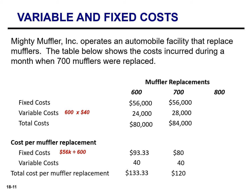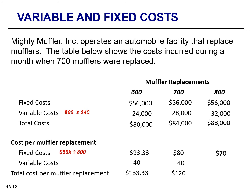Now let's look at 800 mufflers being replaced. Fixed costs remain constant at $56,000. Variable costs are 800 multiplied by $40, arriving at $32,000. When replacing 800 mufflers, total costs are $88,000. Fixed cost per unit is $56,000 divided by 800, which equals $70. Variable cost per unit remains the same at $40, so the total cost per muffler replacement when replacing 800 mufflers is $110.